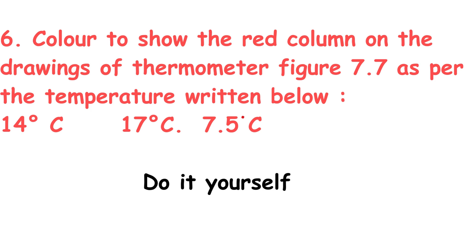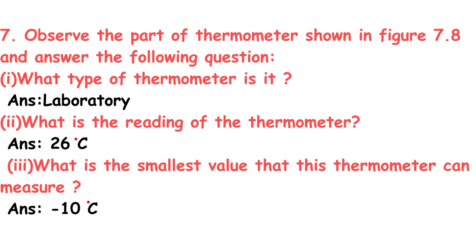Question 6: Color to show the red column on the drawings of thermometer figure 7.7 as per the temperatures written below — 14°, 17°, and 7.5° — you need to draw and color it. Question 7: Observe the part of the thermometer shown in figure 7.8. What type of thermometer is it? Answer: Laboratory thermometer.